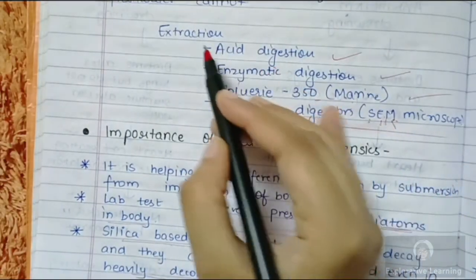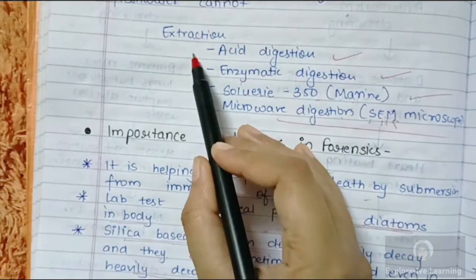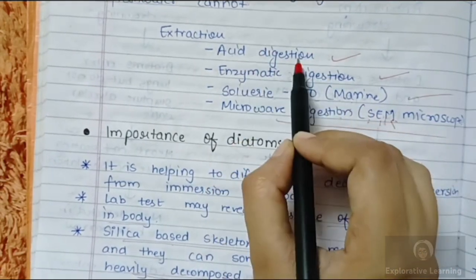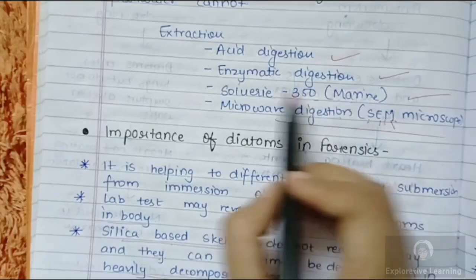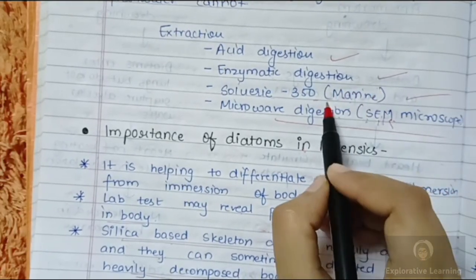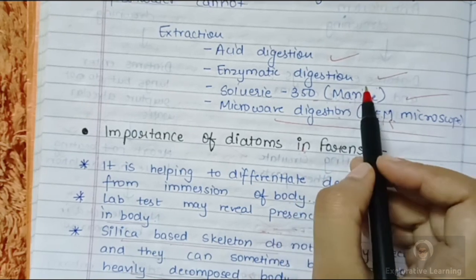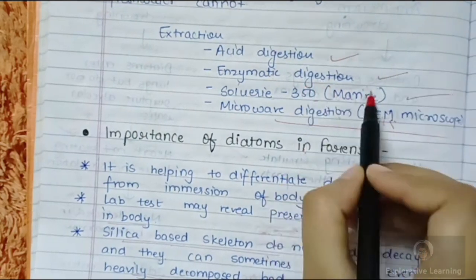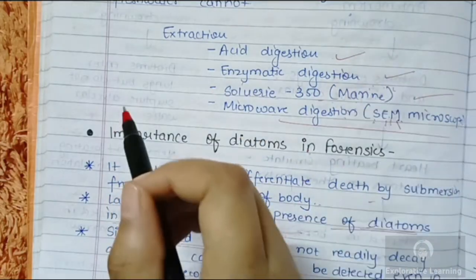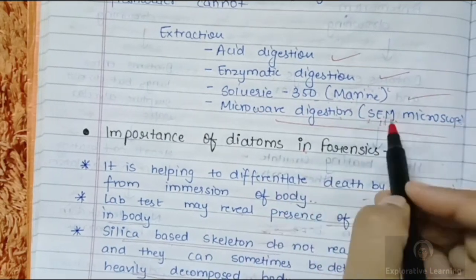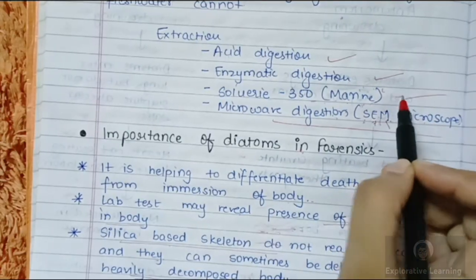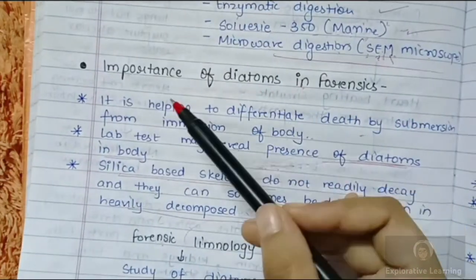Some common extraction methods used when dealing with diatoms include acid digestion, enzymatic digestion, and the Solodine 350 method — which is mostly helpful in cases where the body has been found in marine water. There is also microwave digestion, where analysis is mostly done with the help of SEM, that is scanning electron microscopy.